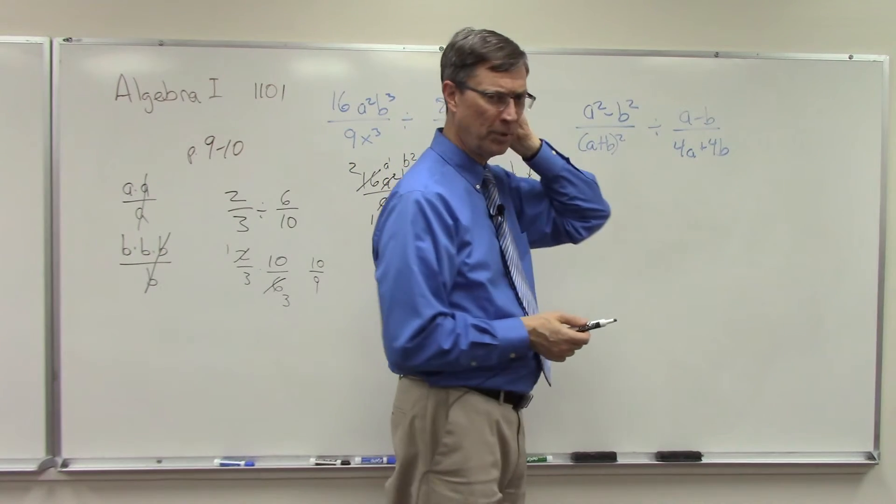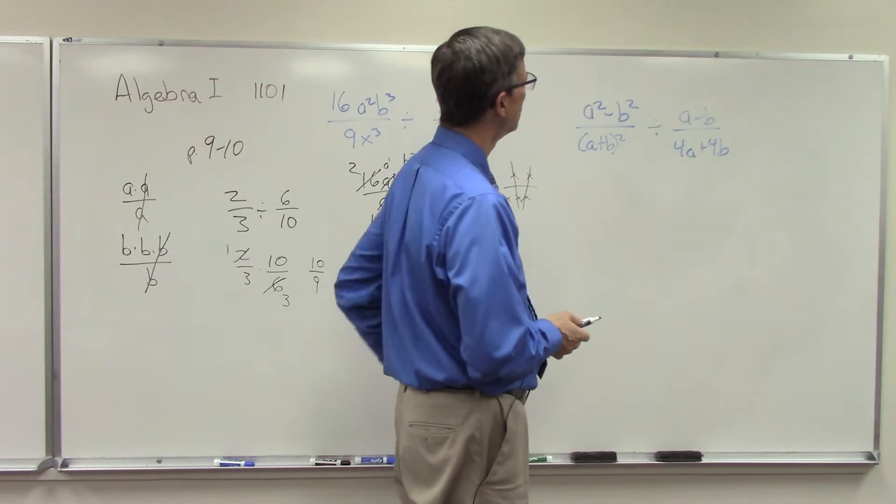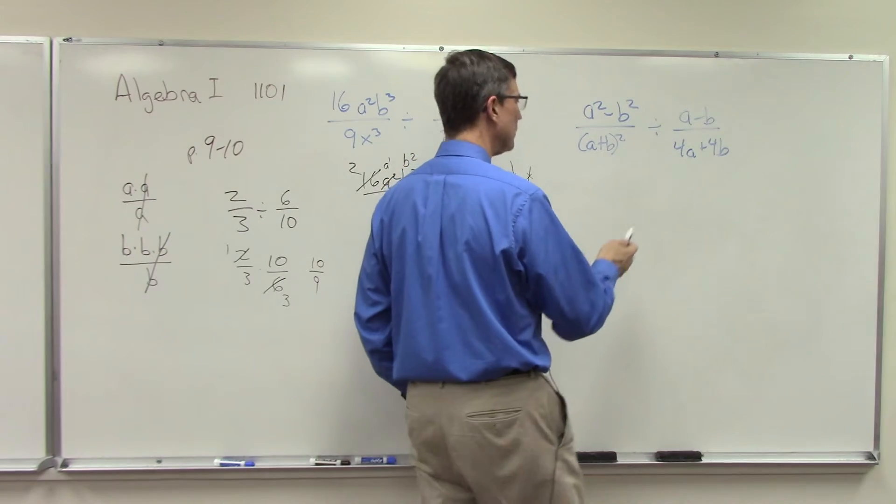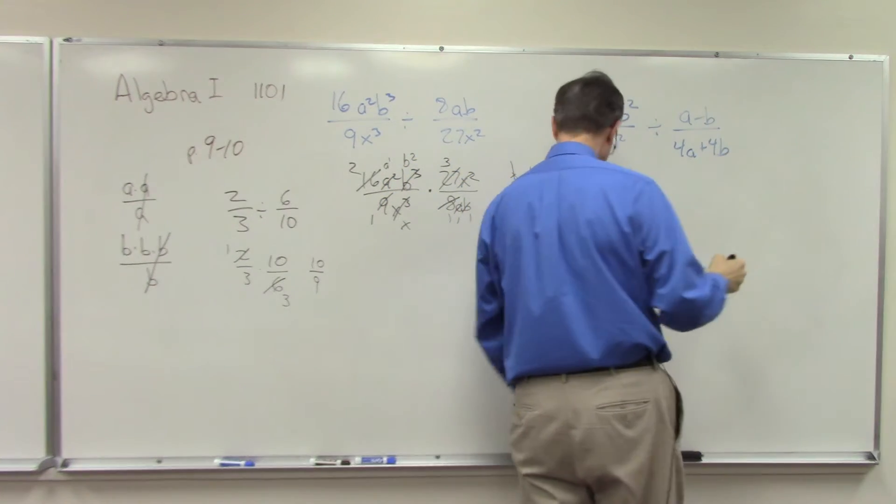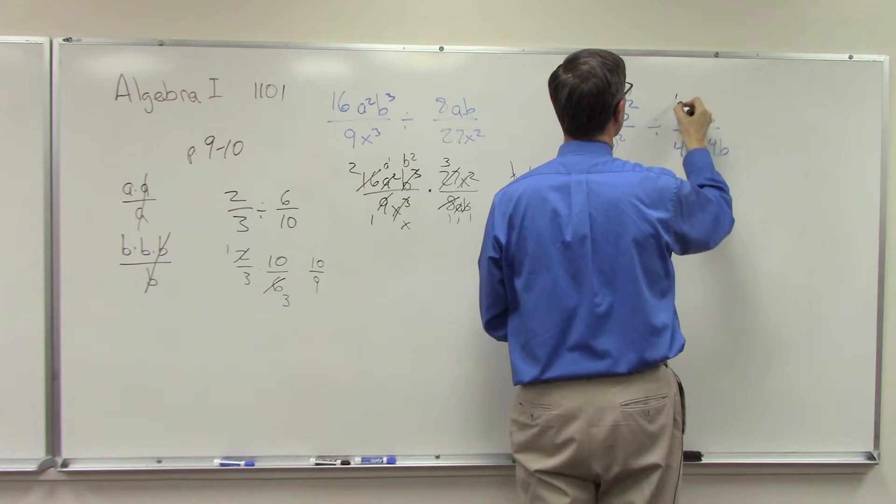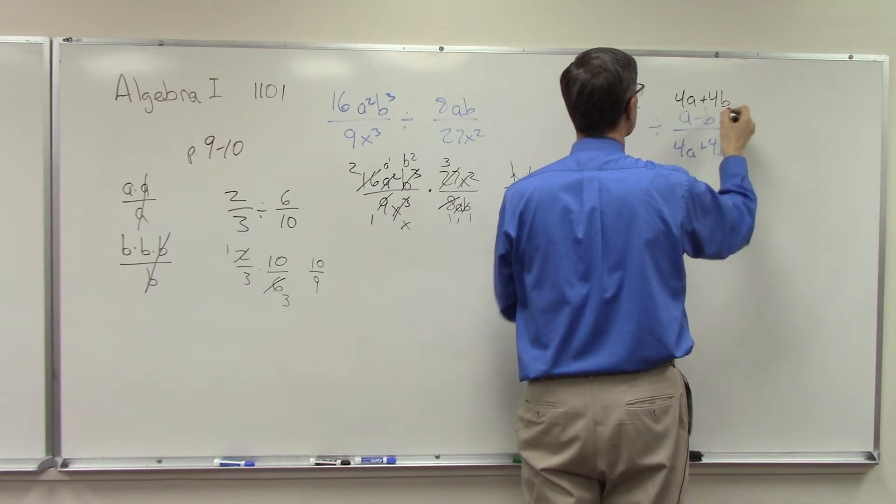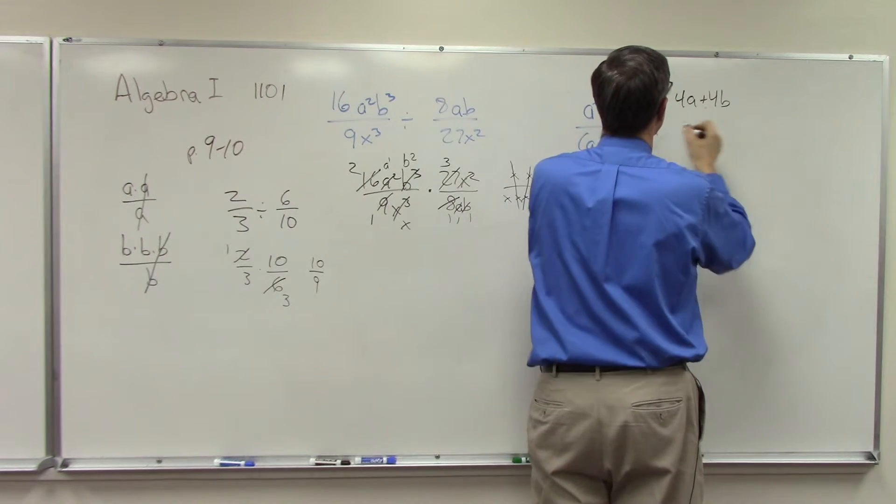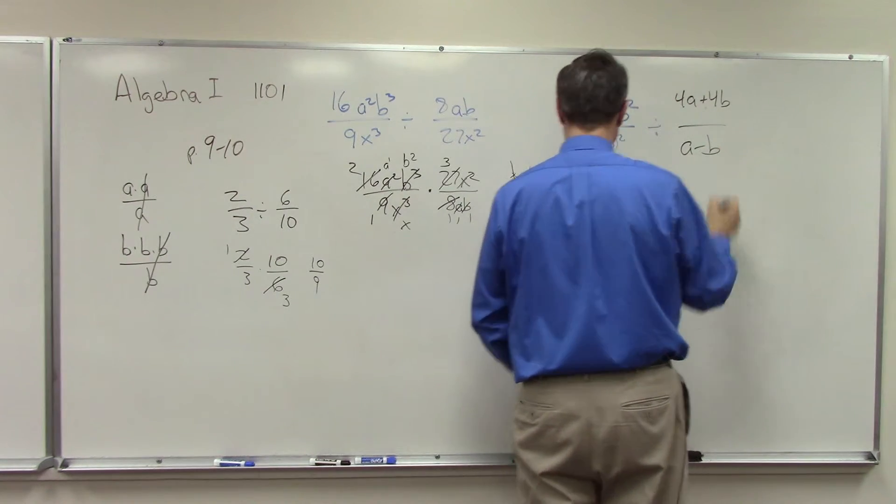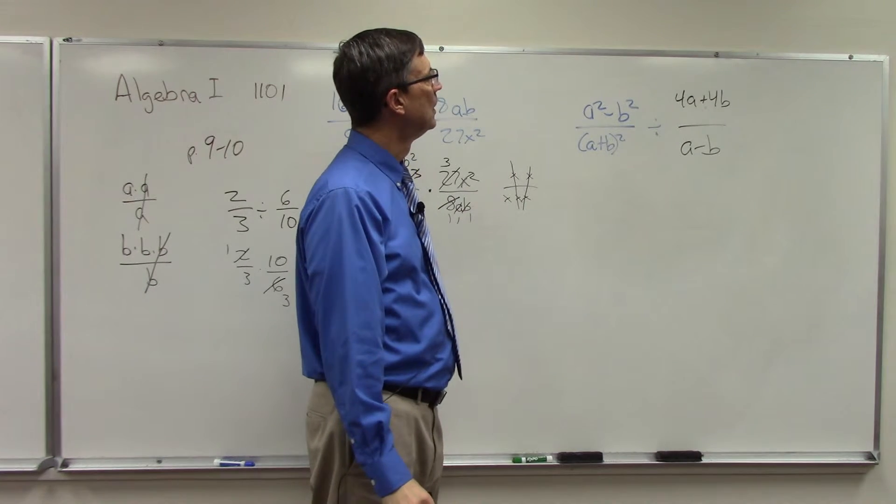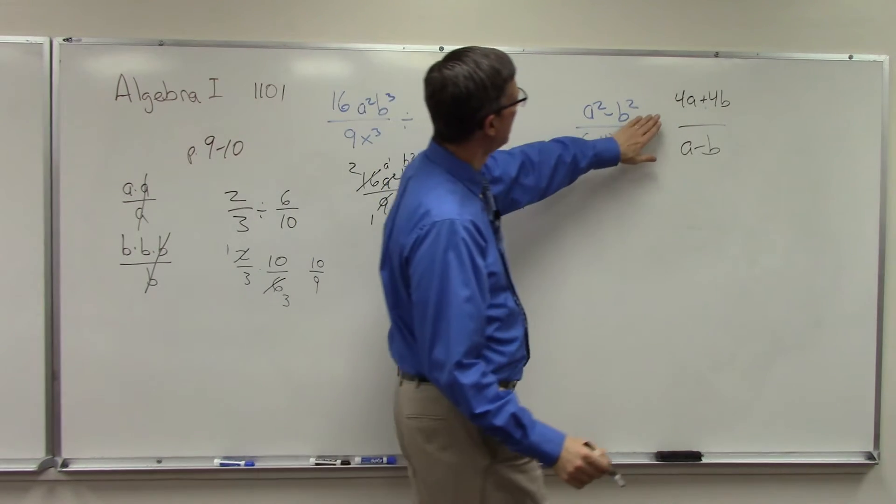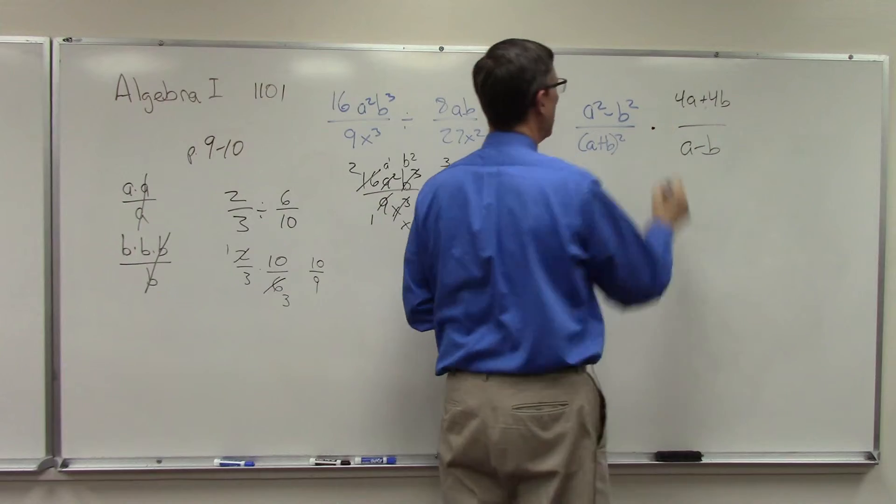Let's talk now about this one. It's another one of the problems you have in your lesson, and the tricky thing here is we're going to flip this upside down. So I'm going to write 4a + 4b, put that over a - b, and now that we flipped it, I can multiply.